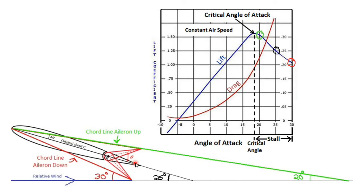The way the ailerons change the angle of attack is by changing the chord line — by changing the trailing edge. The chord line is a straight line from the leading edge to the trailing edge of the wing. The ailerons change where the trailing edge is, which changes the chord line. The angle of attack is the angle between that chord line and the relative wind, so changing the chord line changes the angle of attack.